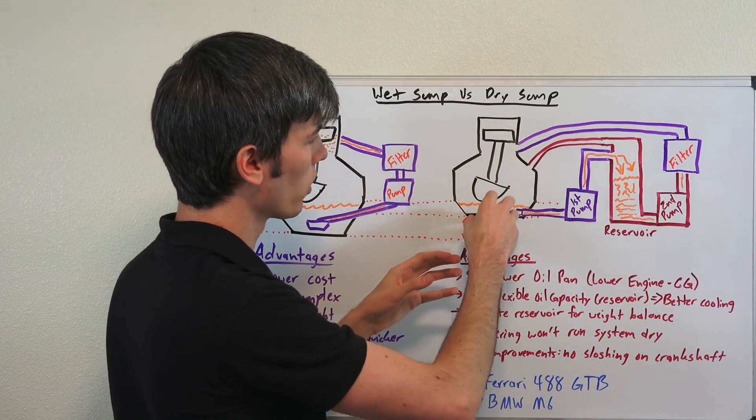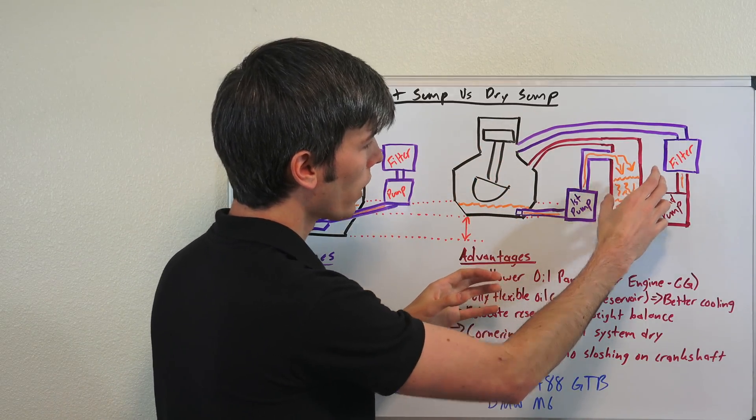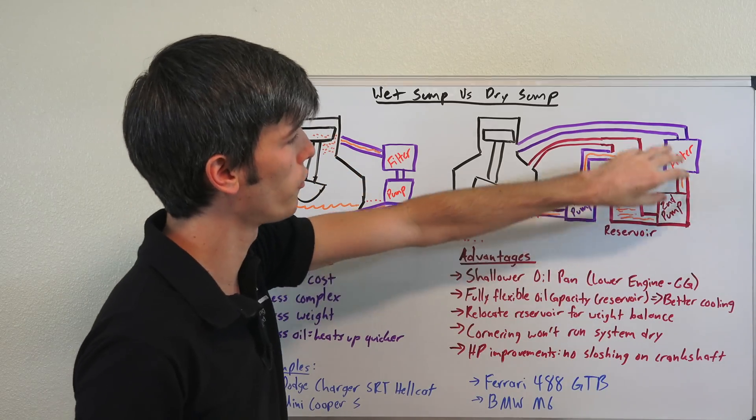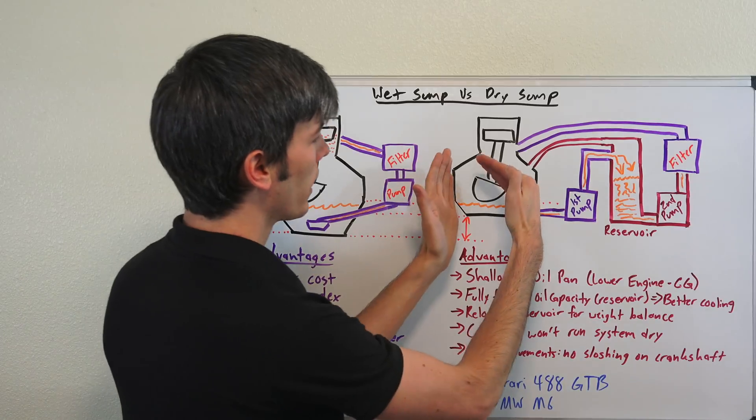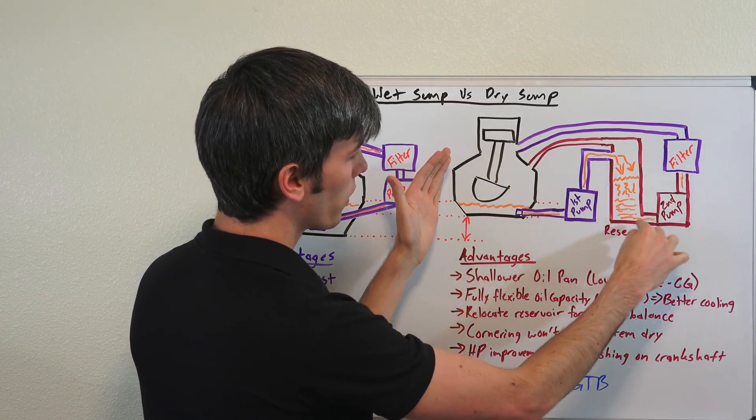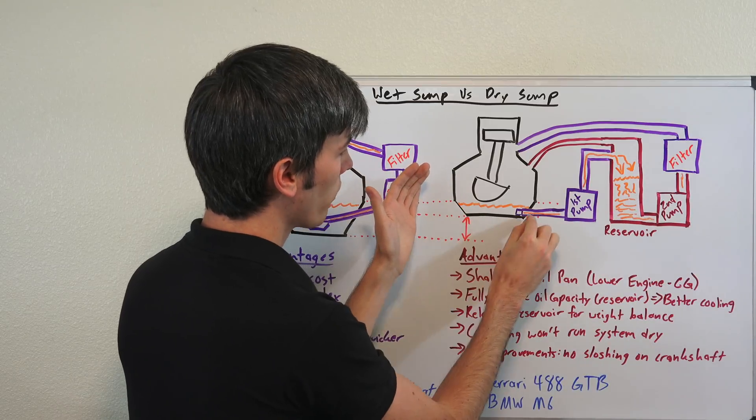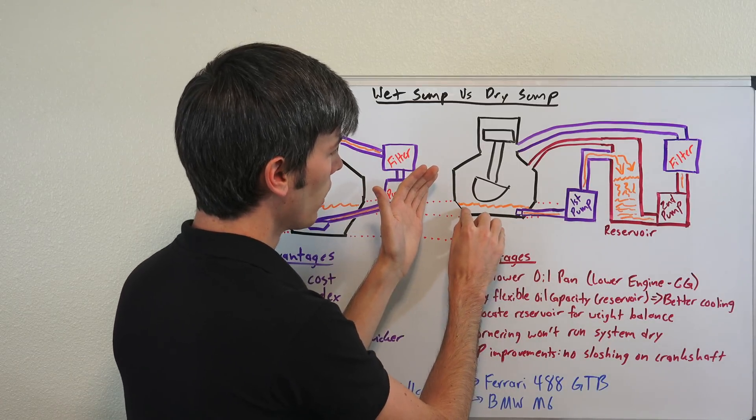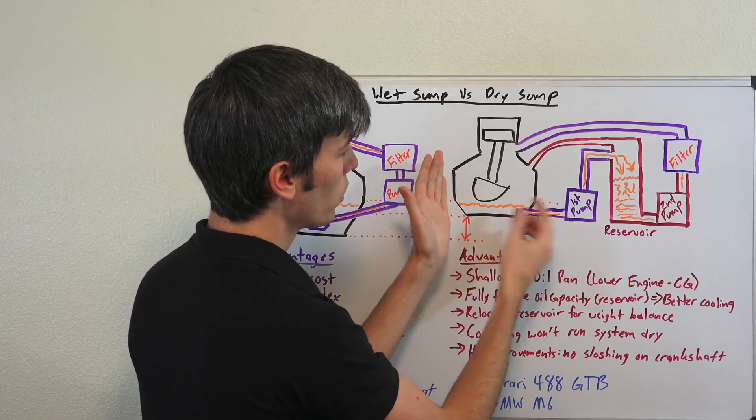Versus in this dry sump system, you're going to have that oil come down but you've got this oil reservoir that's ultimately feeding that engine with oil. So in a high-G turn you may have all the oil sloshing up here, but you've still got all this oil in your reservoir and you can have different pickup feeds located throughout the engine if you'd like to have further protection.